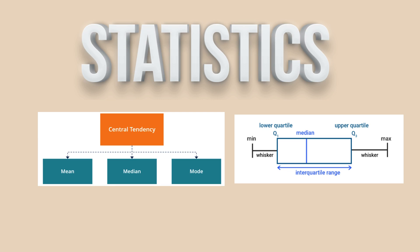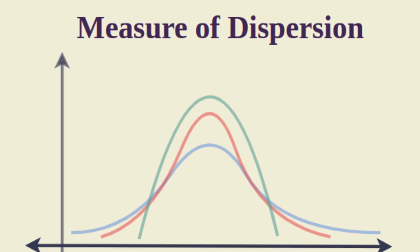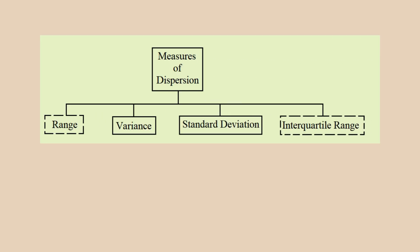In this video, we are going to talk about measures of spread, also called measures of variability, which generally describe how distributed all the data points are across the dataset. There are four commonly used measures of dispersion: range, variance, standard deviation, and interquartile range.